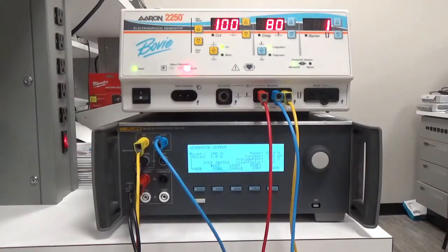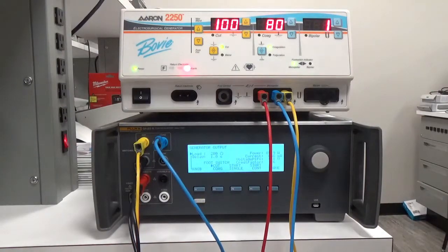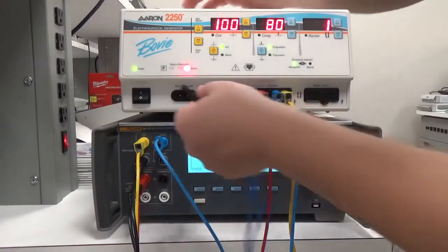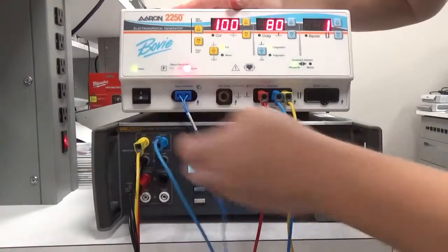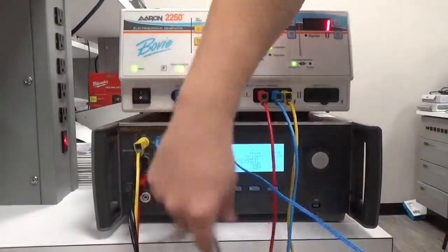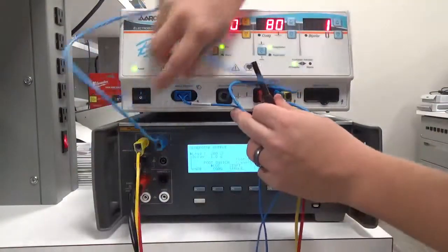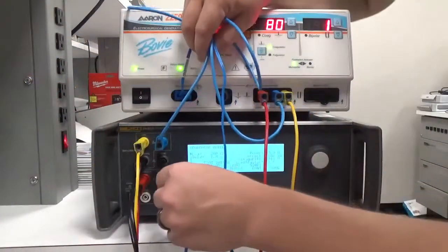Next step, we want to connect our return electrode. Because we're using monopolar, it's not actually going to work unless the return electrode is activated. On the electrosurgical analyzer, we connect the return electrode to the CQM port.